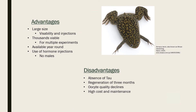The advantages of this model include large size for observations and injections, many models viable for use, and the fact that a male frog is not required, as ovulation can proceed with hormone injection. The disadvantages include absence of indigenous tau proteins, regeneration of the ovulation cycle of about three months, and a decline in quality as Xenopus laevis ages.